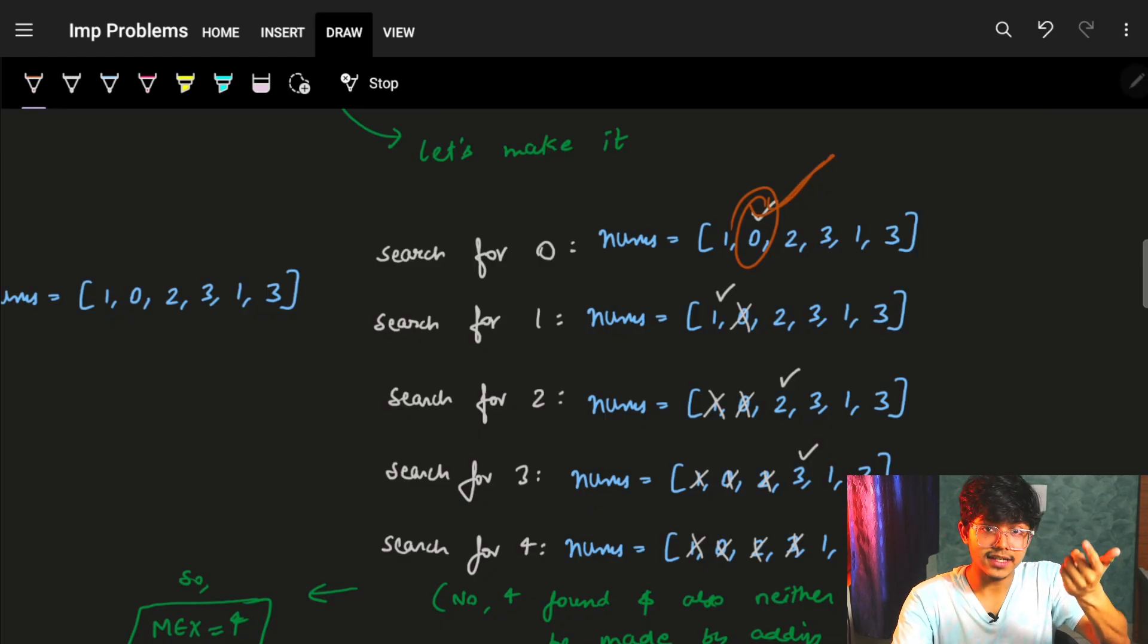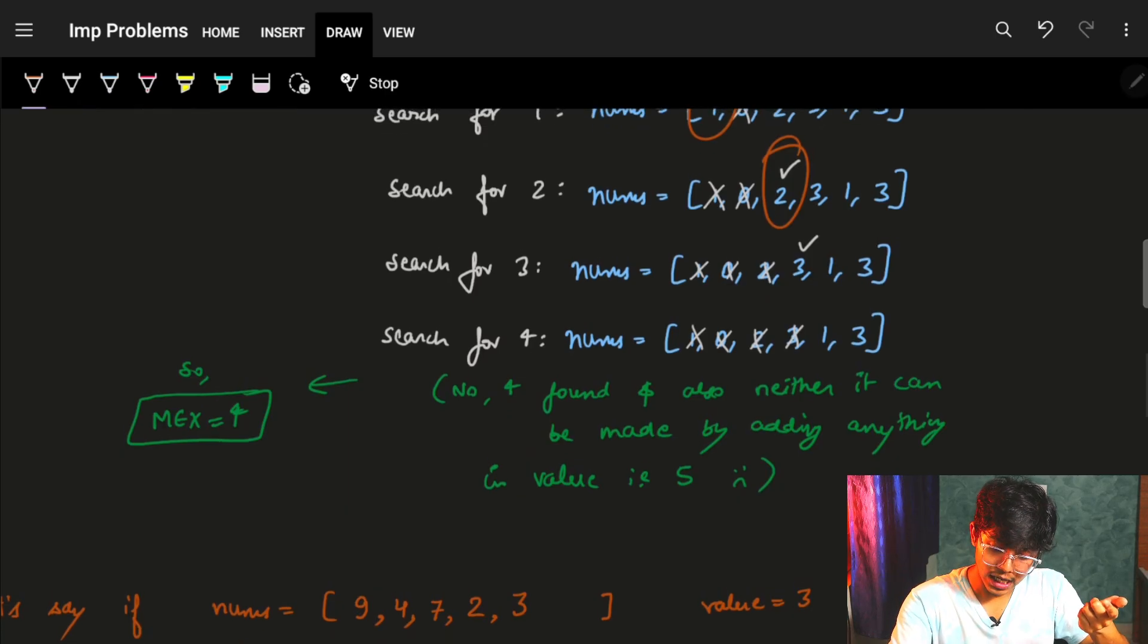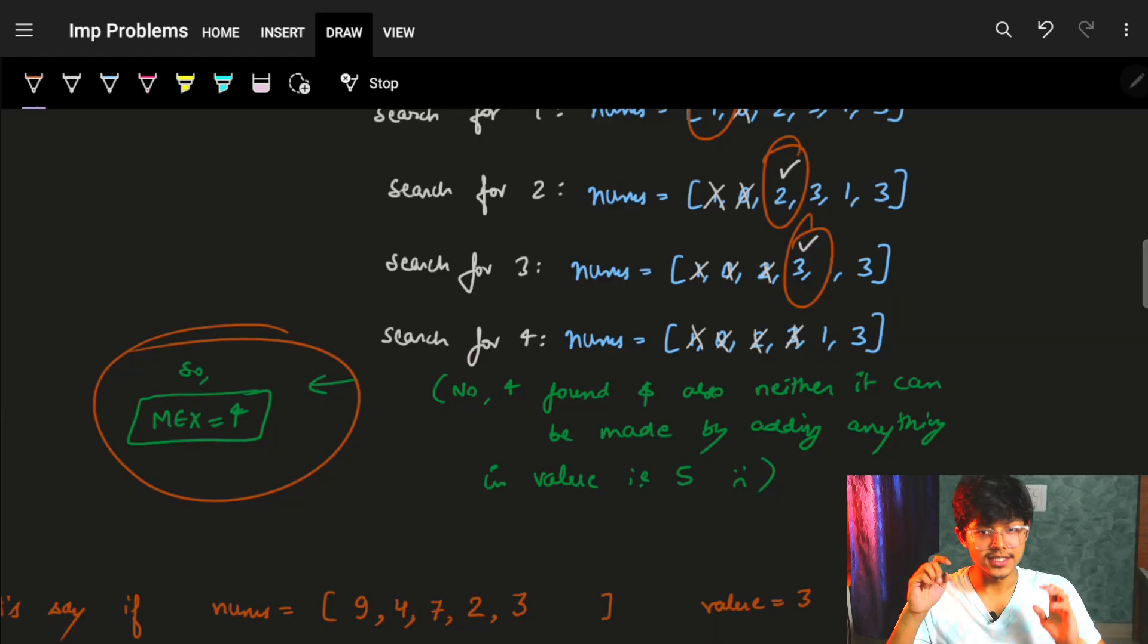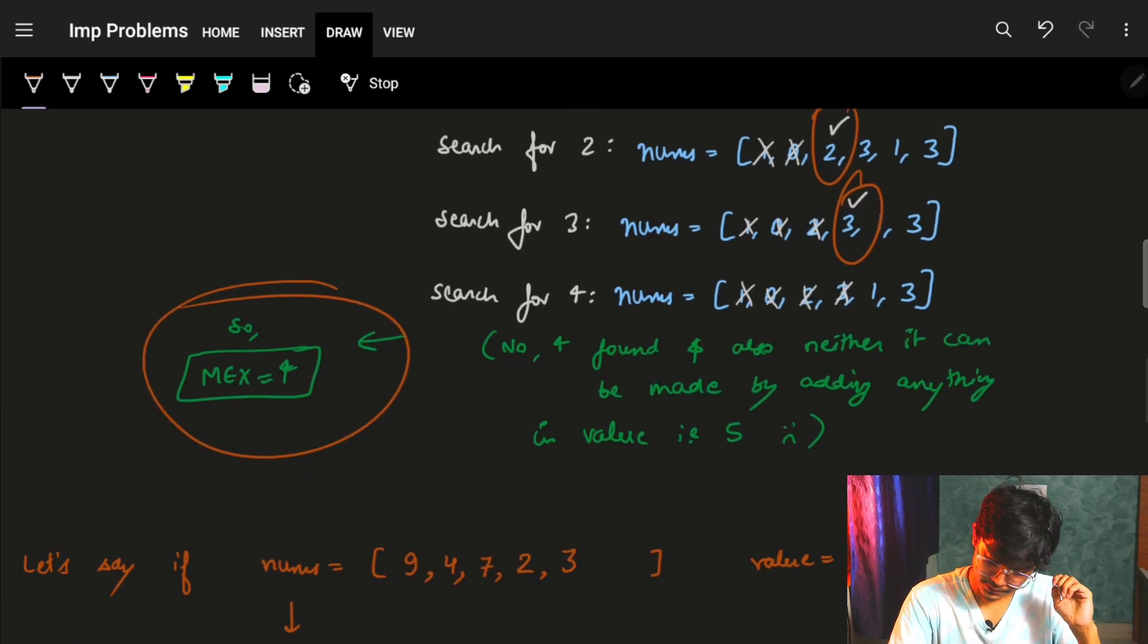I can start from 0. Now, I can start from 0 because for any x, I just want to make something of the sort that I just want to get it as 0, 1, 2, 3, 4, 5. I just want to make it as continuous as possible starting from 0. So I just grabbed a 0. Next, I need to grab a 1, 2, 3, 4. But 4 is not found. But what we did was our best. So MEX is now 4 because we did our best.